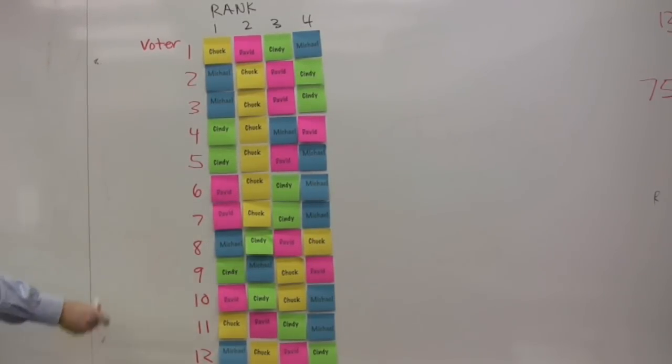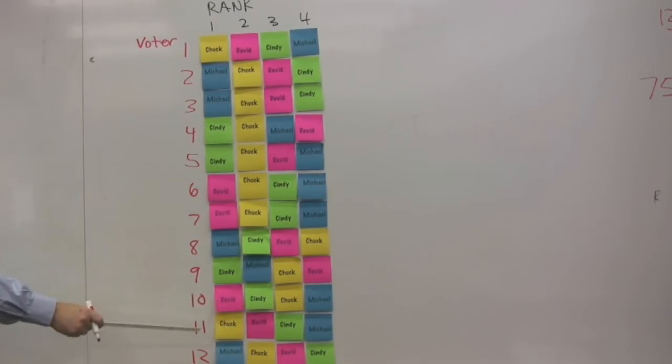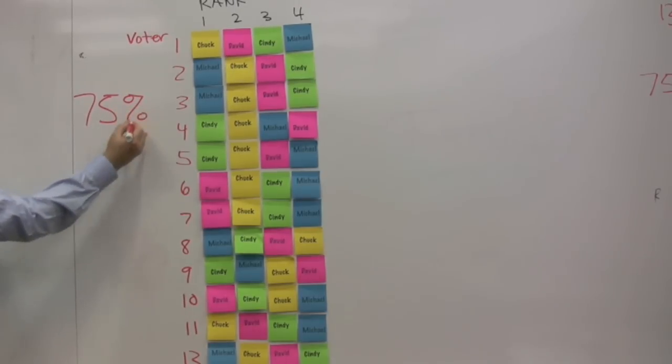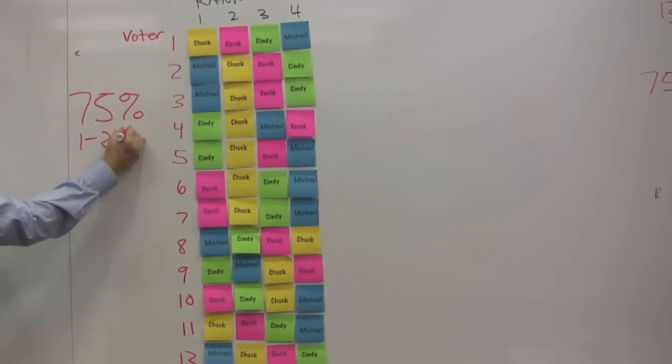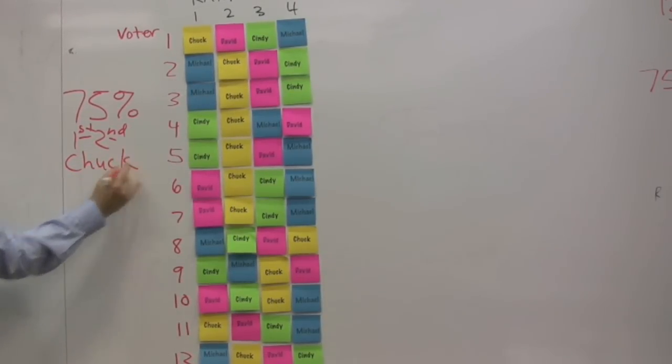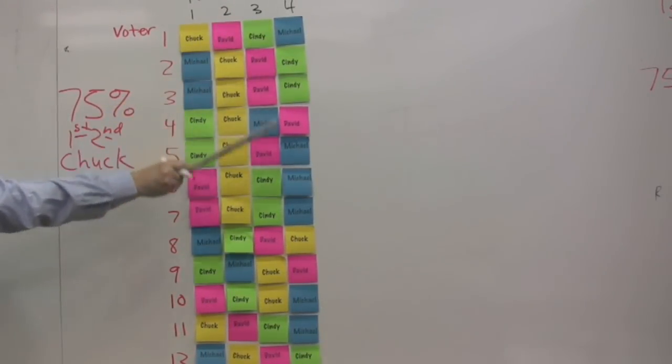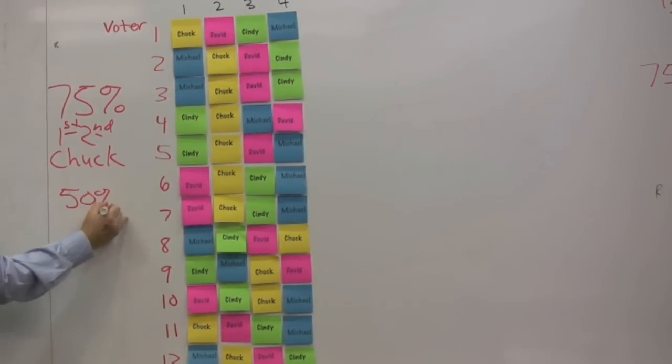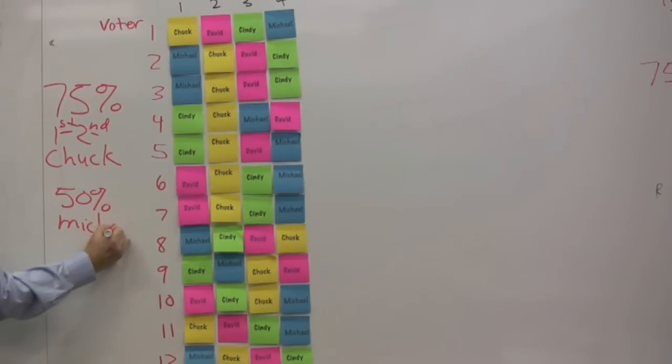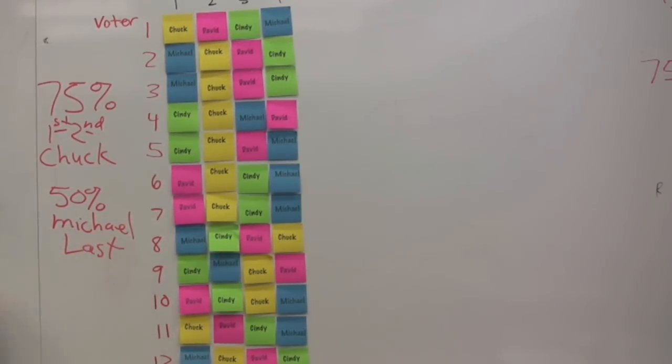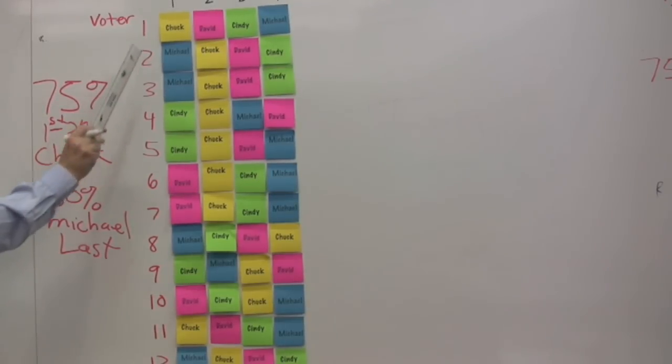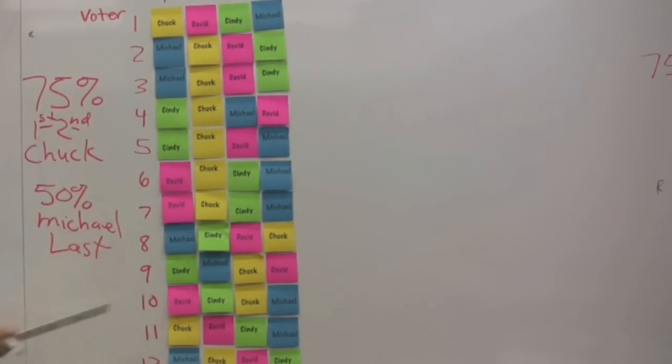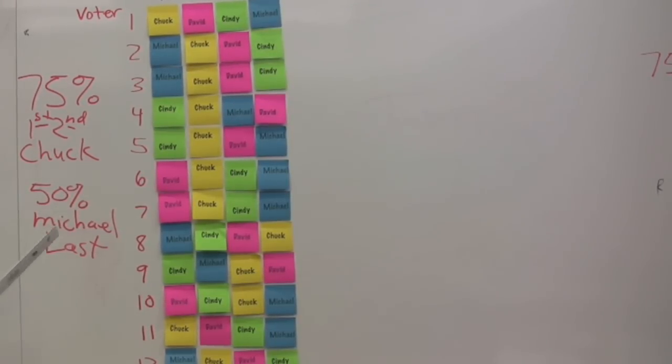A couple of things become very apparent here when you look at it this way. You can see that Chuck is very popular, garnering nine first or second place votes, getting 75% of the citizens' votes for first or second place. Whereas taking a look at the last rank or fourth, a lot of blue there for Michael, he gets six of the 12 or 50% goes to Michael in last place. So, 75% of the voters chose Chuck for first and second place. 50% chose Michael for last.